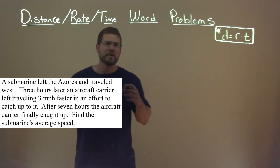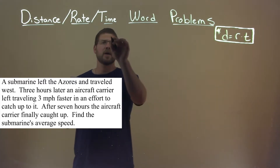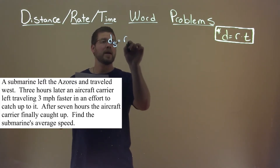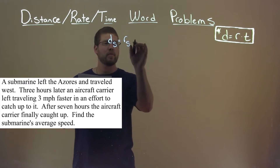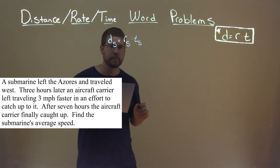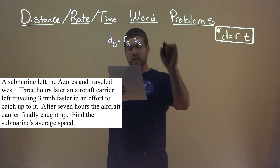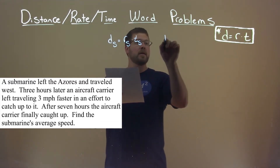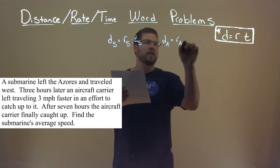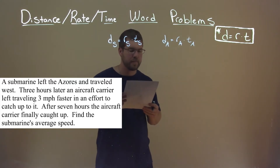We know distance equals rate times time, so we're going to set this up as: distance of the submarine is equal to the rate of the submarine times the time of the submarine. And the distance of the aircraft carrier is equal to the rate of the aircraft carrier times the time of the aircraft carrier.